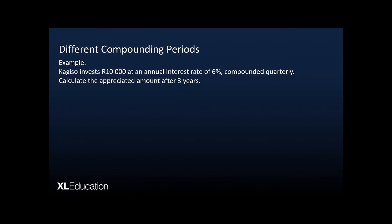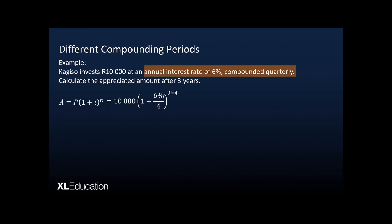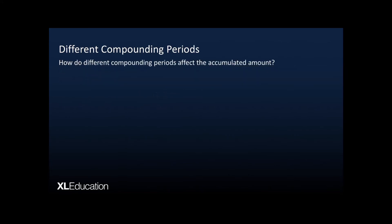Another example: Kajiso invests 10,000 rand at an annual interest rate of 6% compounded quarterly. Calculate the appreciated amount after three years. Since we're compounding quarterly, we divide the rate by 4 and multiply the number of years by 4, giving us the new appreciated amount.